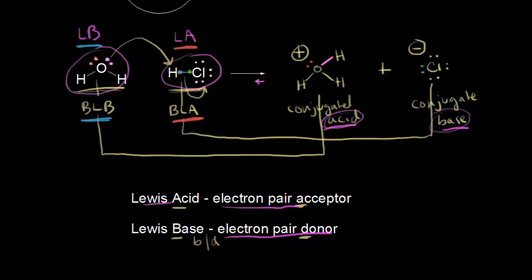Lewis acid and base also have particular importance in organic chemistry. You can use the term Lewis acid as synonymous with electrophile, and a Lewis base — an electron pair donor — is a nucleophile. Nucleophile and electrophile are extremely important concepts to understand when talking about organic chemistry.